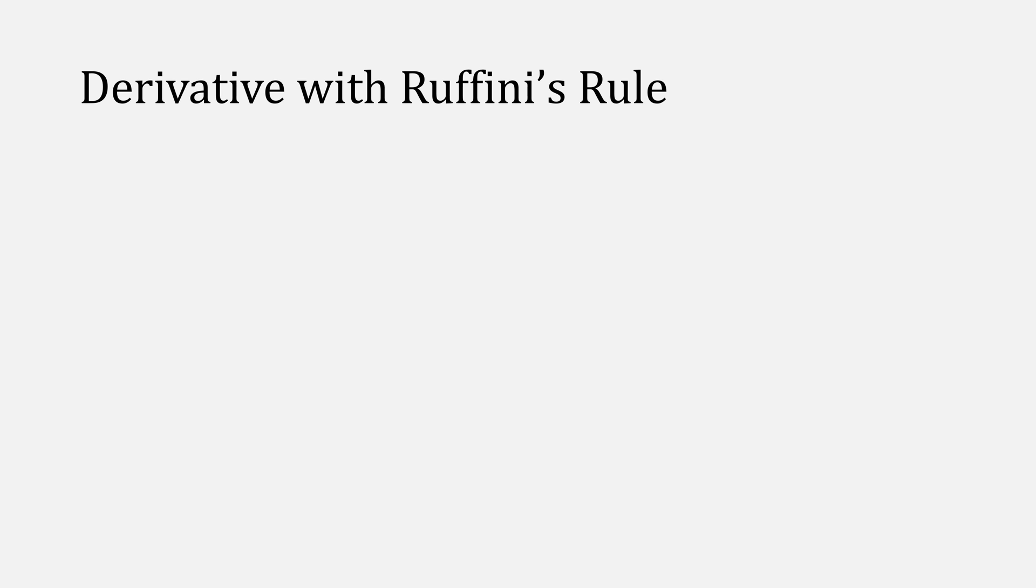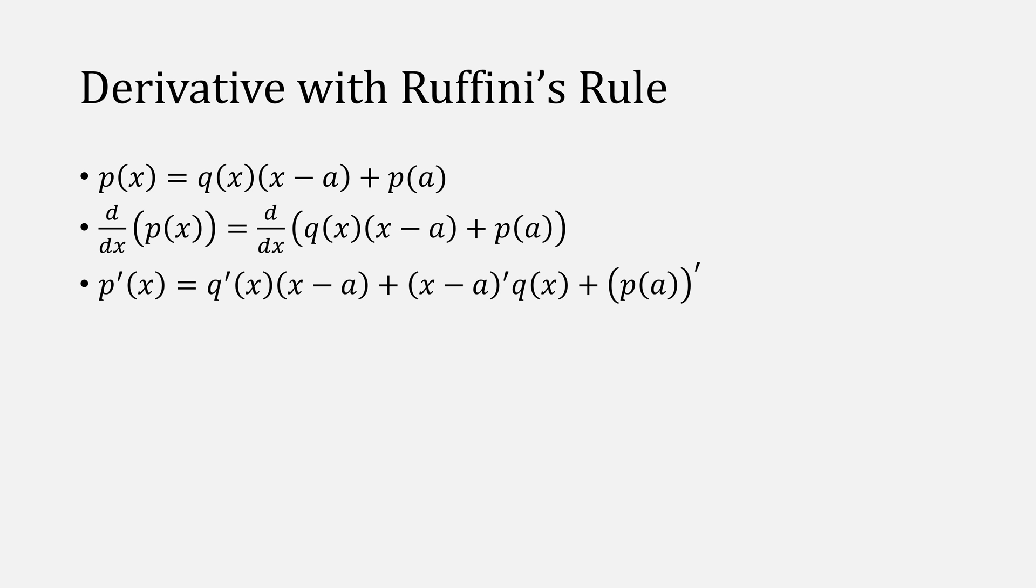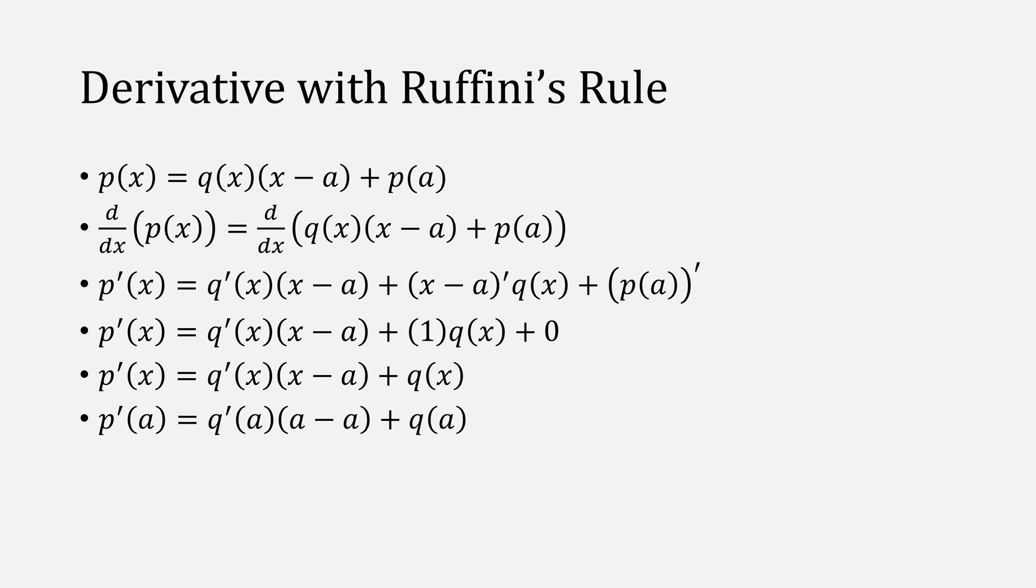Ruffini's rule also lets us compute the derivative of a polynomial. So if we start with Ruffini's rule and take the derivative of both sides, we expand it using the product rule. Then we can simplify this since p of a is a constant, so the derivative is 0, which we can then simplify further. Notice this still requires another derivative, the derivative of q. If we plug in a, now we have a minus a, which simply gives us the derivative of p at a is equal to q at a.